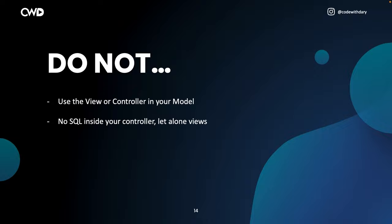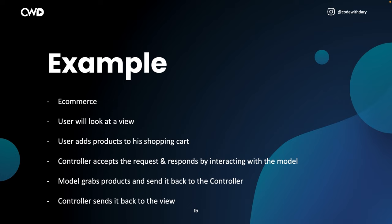Let's look at a small example. Think about an e-commerce site where a user wants to buy a product — they start by looking at a view, then press a button to add a product to their cart, which sends an HTTP request via the browser to the controller. The controller responds by interacting with the model, asking it for information about that specific product. The controller stores that value and sends it back to the view, and finally the product is displayed to the user. Don't get hung up on MVC too much since you'll be learning it along the way.